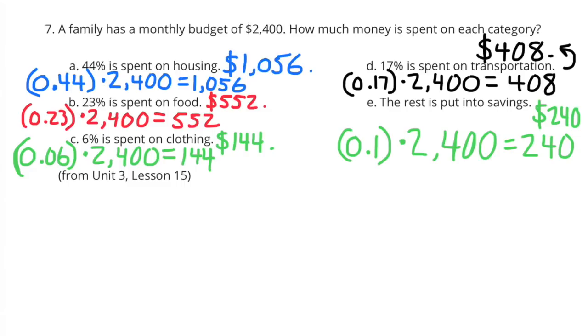D. 17% is spent on transportation. 17 hundredths times 2,400 equals 408. They would spend $408 on transportation.